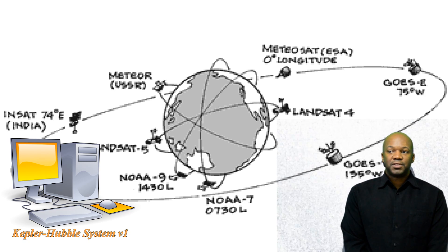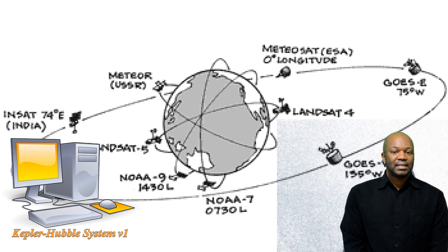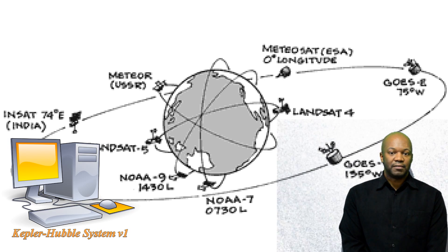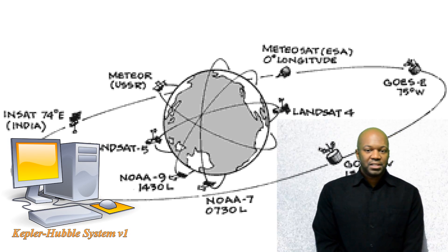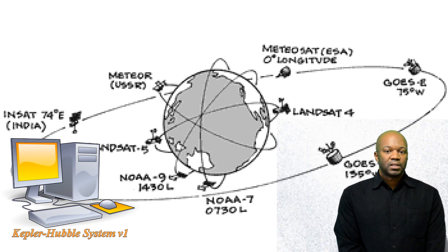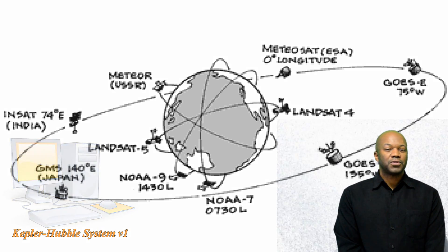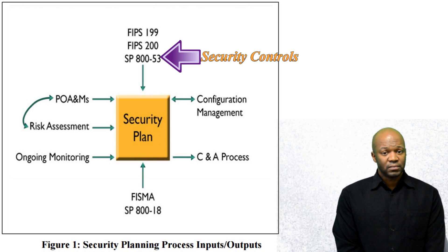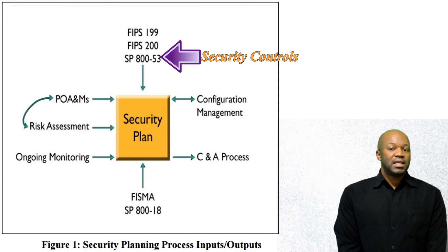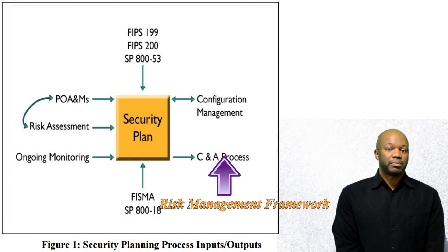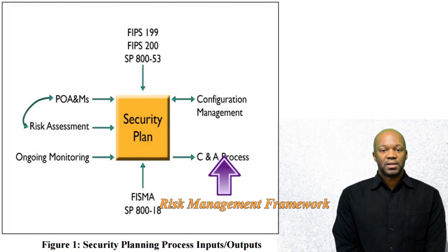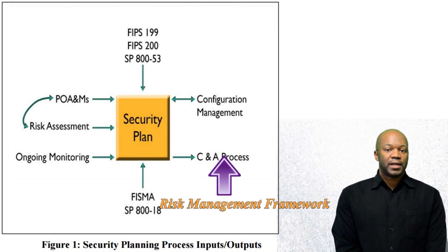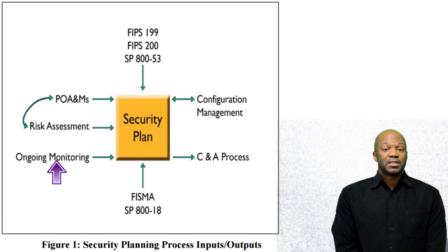We have to make sure that FIPS 199 is implemented in our system security plan, so we need a title and a description of the system. In addition to that, we're going to have to document all the security controls, and all those security controls actually come from NIST 800-53. We're also going to have to make sure that the C&A process — also known as a risk management process — is followed, with all steps documented in our system security plan. We also need to make sure ongoing maintenance, also known as continuous monitoring, is met.